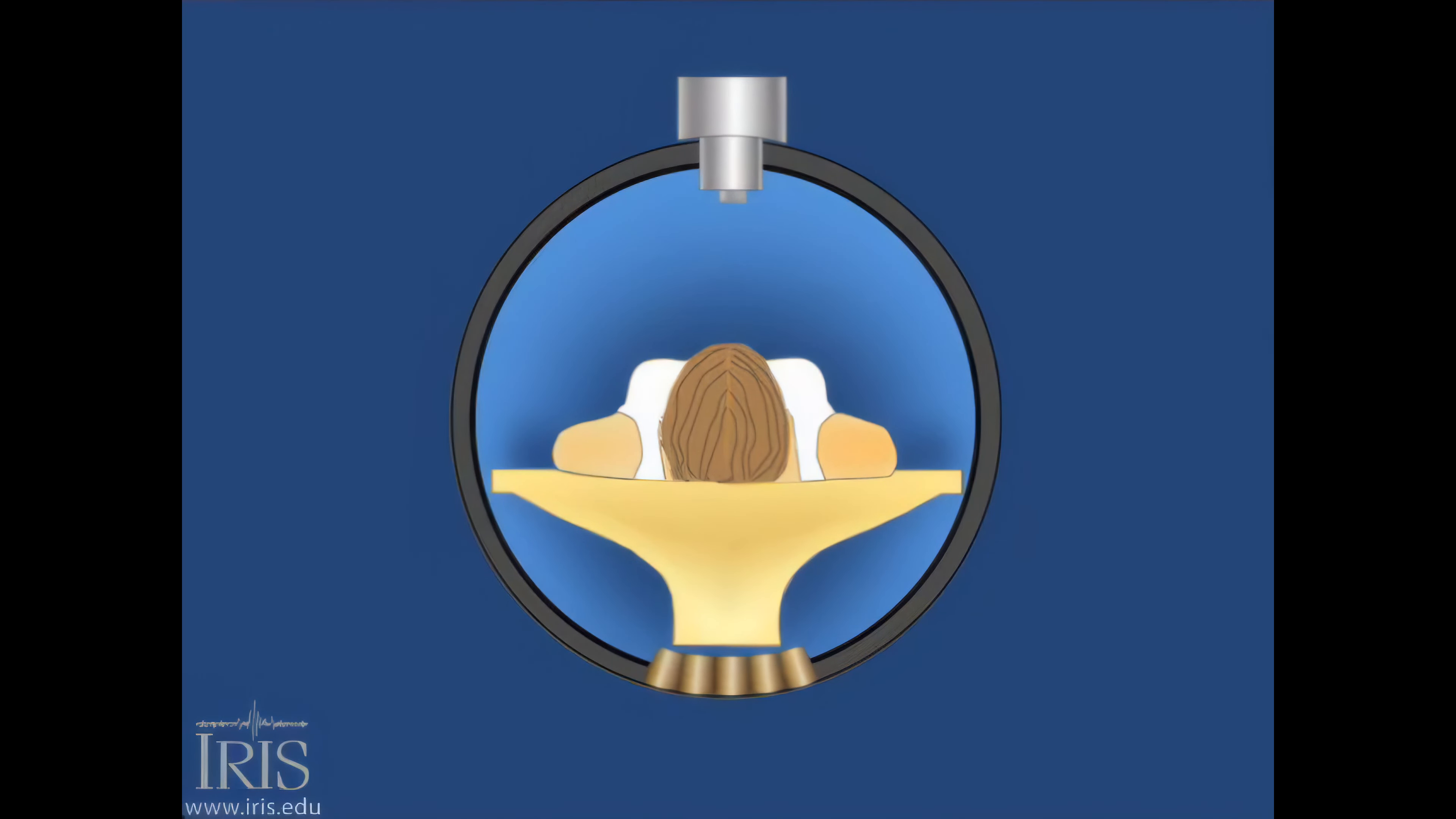CAT scans produce 3D images of the inside of the human body. The instrument uses an energy source that emits a fan-shaped beam of X-rays and a receiver or X-ray detector on the exit side of the patient that records a snapshot X-ray.